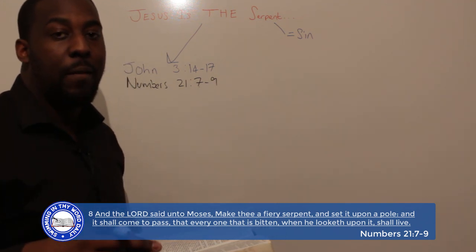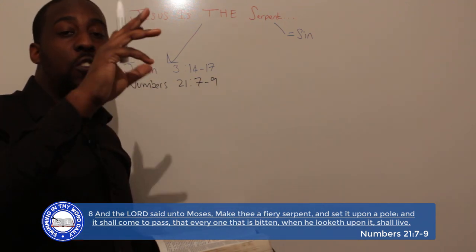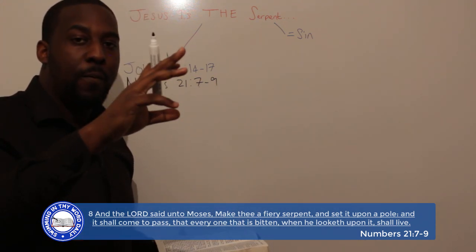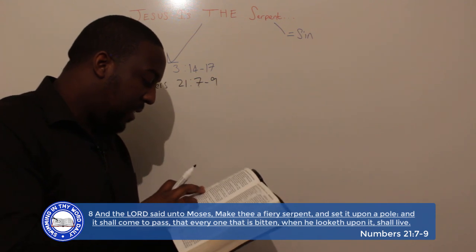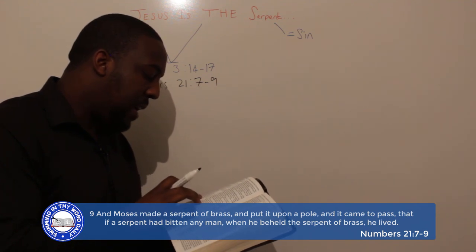Verse 9: 'And Moses made a serpent of brass and put it upon a pole, and it came to pass that if a serpent had bitten any man, when he beheld the serpent of brass, he lived.'